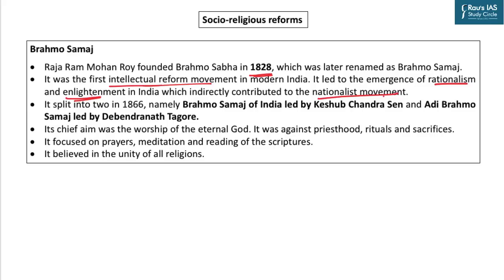After the death of Raja Ramohan Roy in 1833, things didn't go very well for Brahmo Samaj. Finally, in 1866, it split into two factions. One faction, called Brahmo Samaj of India, was led by Keshav Chandra Sen. The other was called Adi Brahmo Samaj, led by Debendranath Tagore. This split happened fundamentally on account of the revolutionary thinking of Keshav Chandra Sen, who considered all religions to be equal and wanted the teachings of other religions incorporated. This mixing of all religions became the precipitating point for the split.